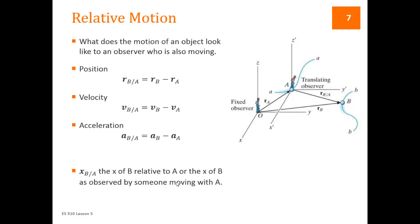Mathematically, what that is is simple vector subtraction. So position-wise, you've got the position of B relative to A is the position of B minus the position of A. Velocity of B relative to A is the velocity of B minus velocity of A. And the acceleration of B relative to A is the acceleration of B minus acceleration of A. There's a couple of things to notice.